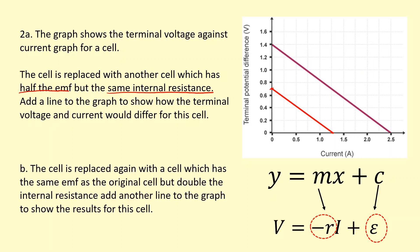The cell is replaced again with one that has the same EMF as the original — so the y-intercept stays at 1.4 — but double the internal resistance. Double the internal resistance means the gradient is twice as steep. Instead of reaching the x-axis at 2.5, it now gets there at about 1.25. So the new line starts at the same y-intercept but has a steeper gradient.